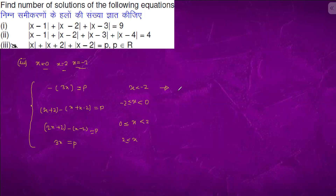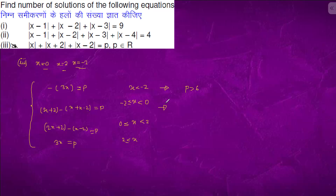So from here, for x less than minus 2, we get minus 3x equals p. Since x is bigger than 6, p should be bigger than 6. From the next interval we get minus x plus 4 equals p.